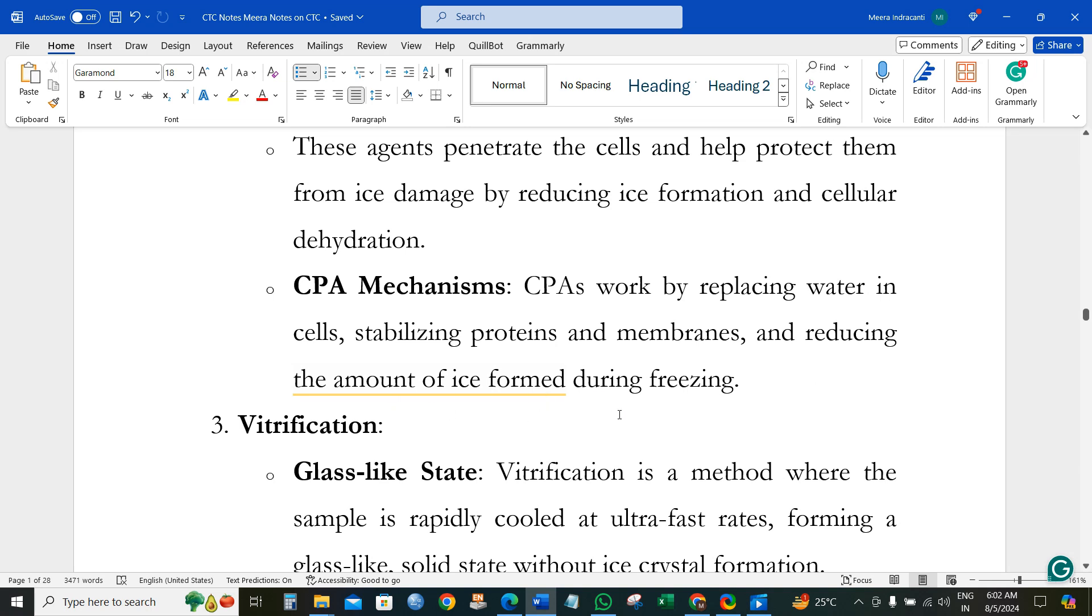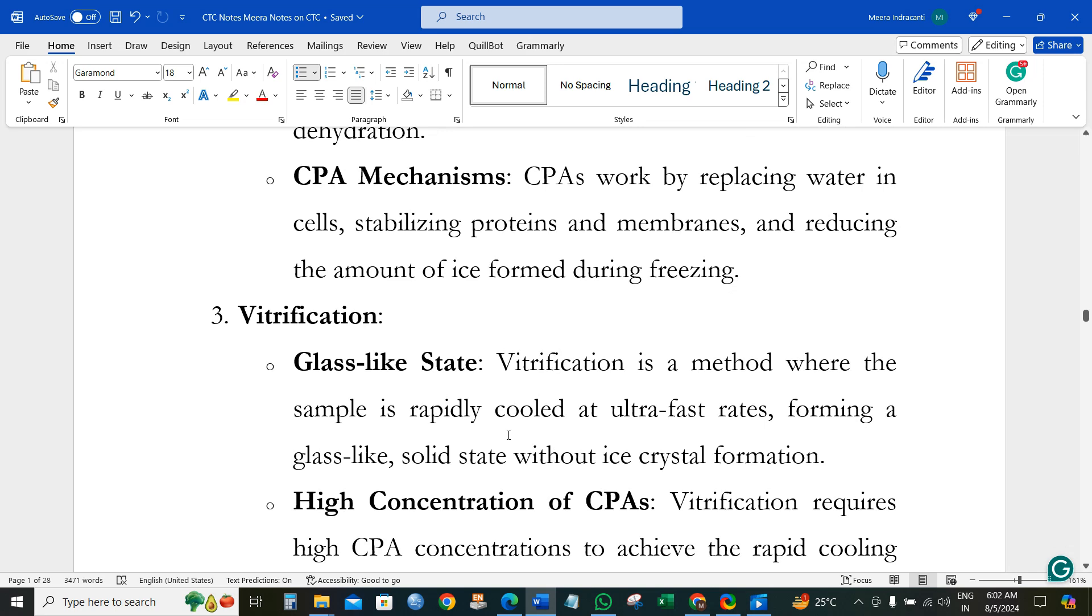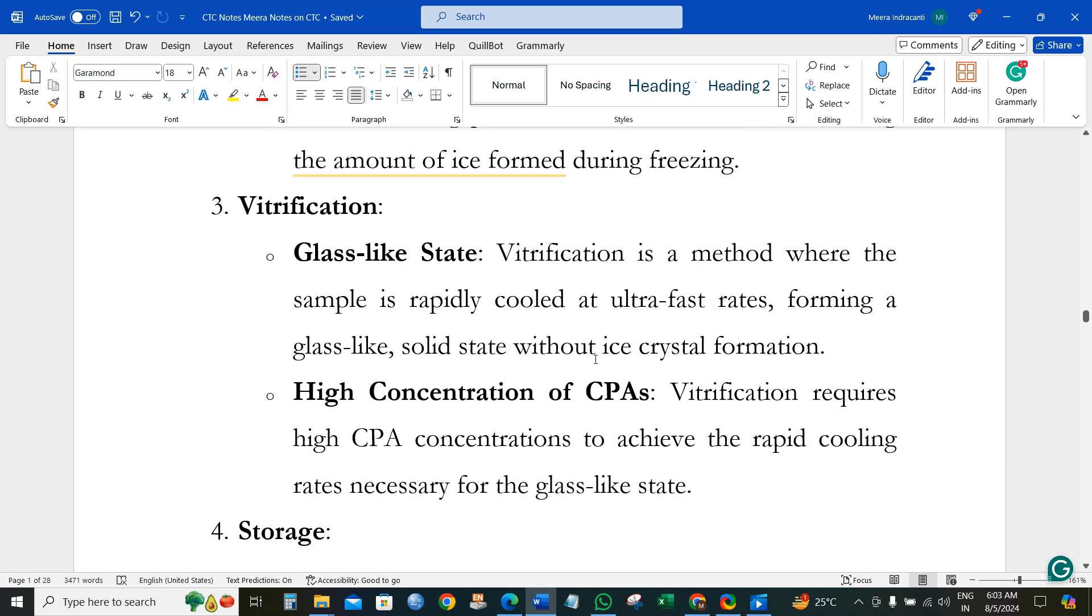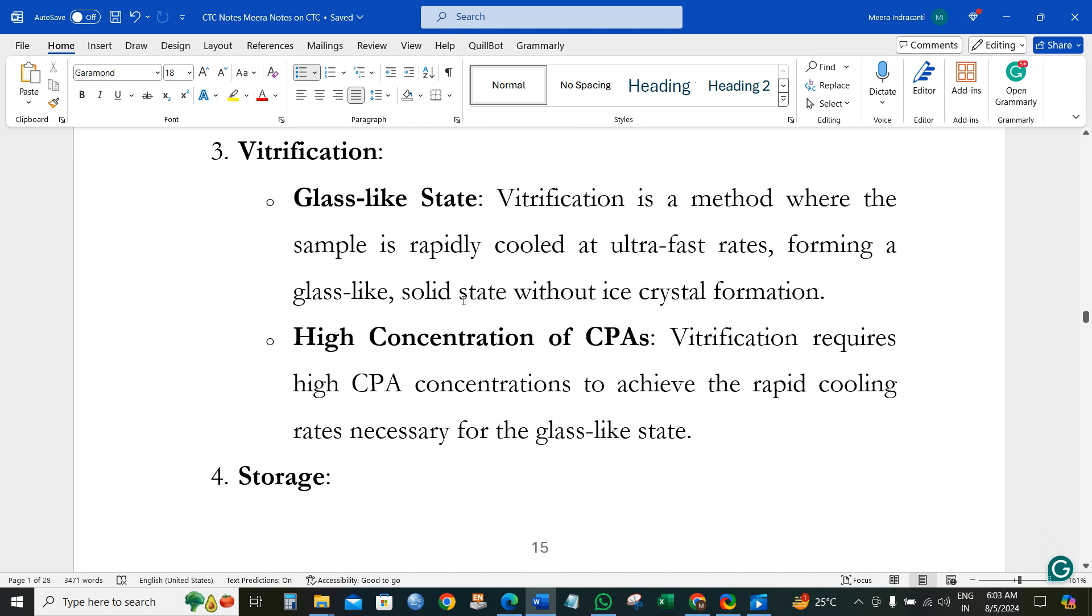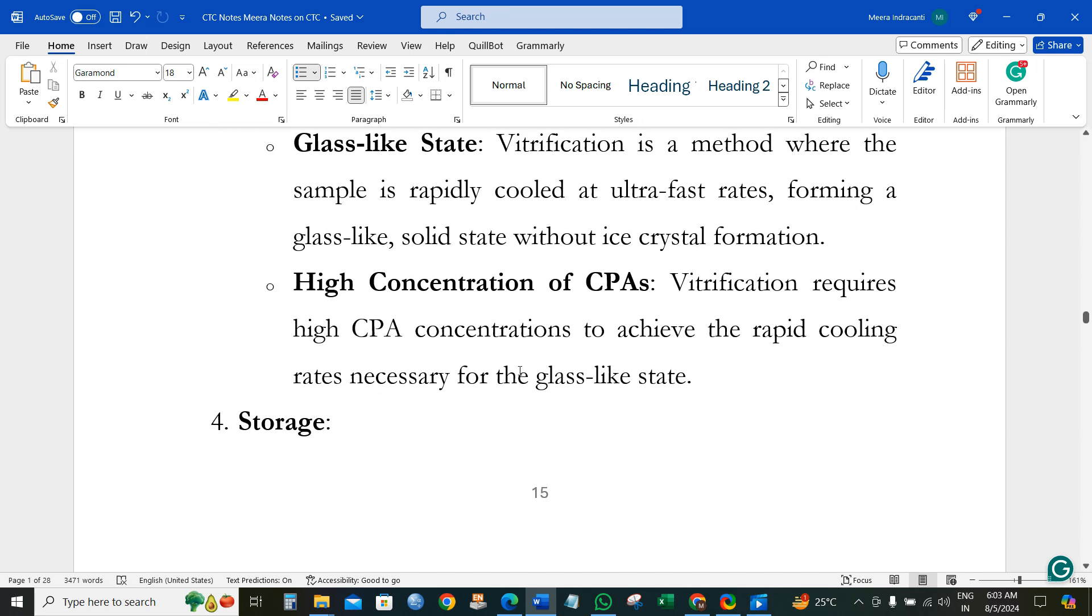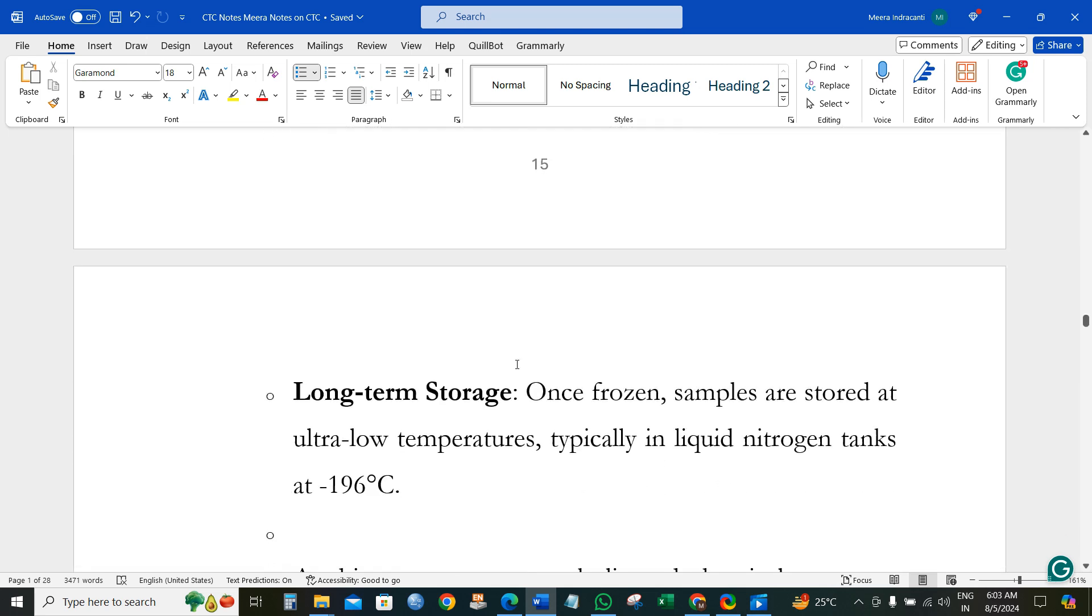CPAs replace water and stabilize the cell contents, reducing ice formation during the freezing process. When we cool the cells using a technique called vitrification, they reach a state where crystals will not form but instead achieve a glass-like solid appearance. High concentrations of CPAs are required for rapid cooling, preventing the formation of ice crystals.